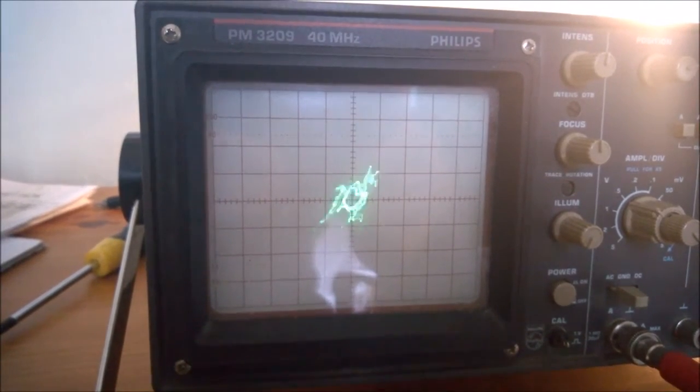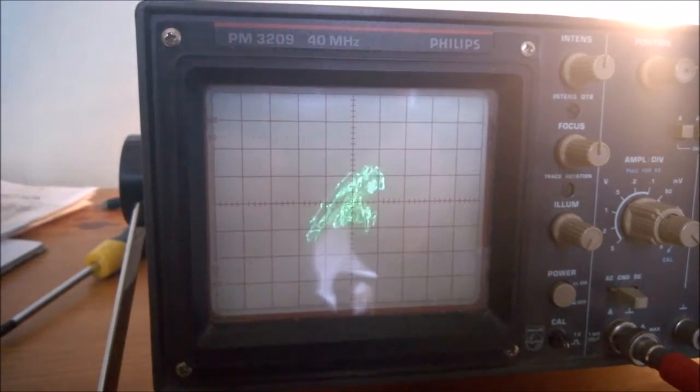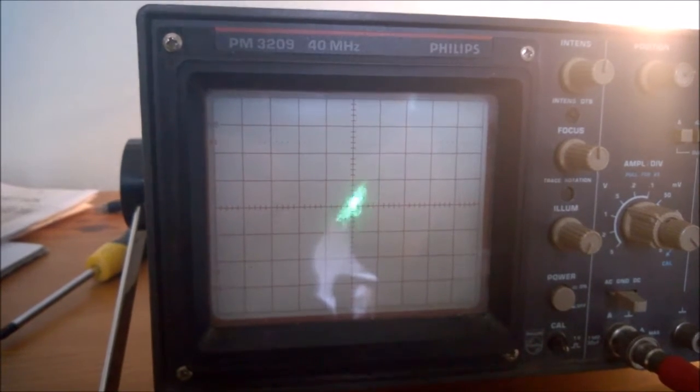That's why we now add another sawtooth, multiplied with a cosine wave of a slightly different frequency to our left channel.